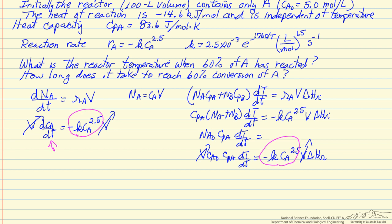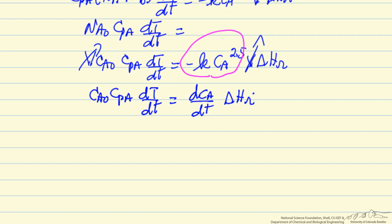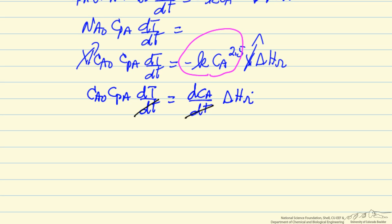I can substitute for this term here, so I can substitute dCA with respect to time, and I'll get a linear relationship between concentration change and temperature change. Now I can basically cancel the dT and integrate, and when I do that, CA0 heat capacity are constant, so T minus T0 equals heat of reaction, CA at any given temperature, minus CA0.